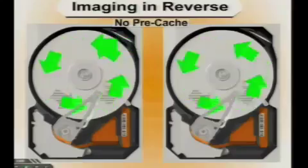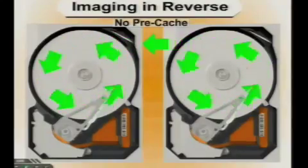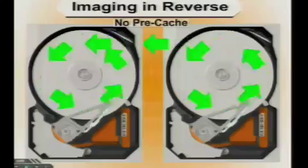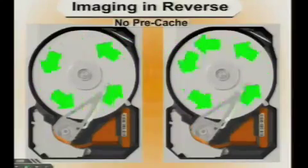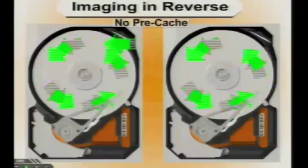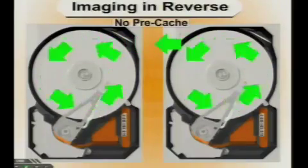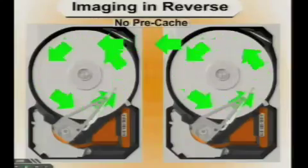But if you do your drive copy in reverse, you actually image a hard drive in reverse, there is no cache. It basically is looking at the current sector and it's not doing a pre-cache because it's not ahead of itself, it's going in reverse. So it's a good technique.